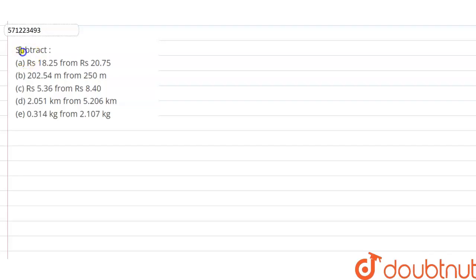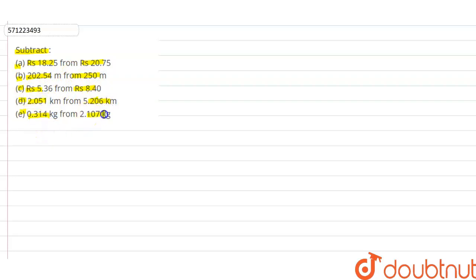The given question is subtract, and here we have the given question in five parts. We have to subtract each value one by one, and we will find the subtraction one by one.